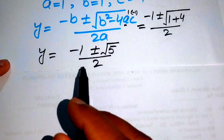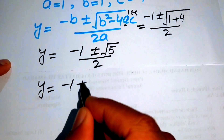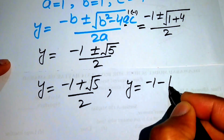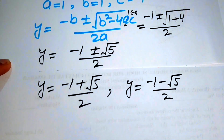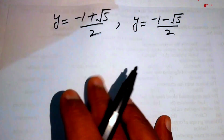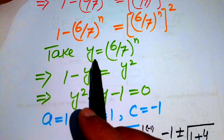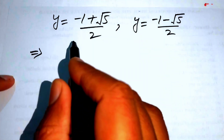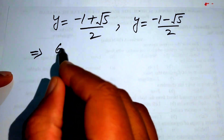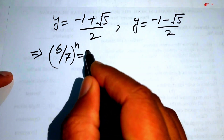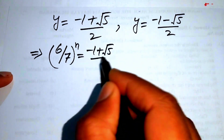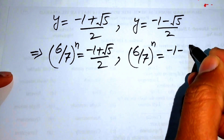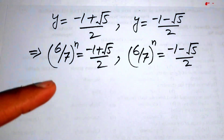We split into two cases. The positive case gives y = (-1 + √5) / 2, and the negative case gives y = (-1 - √5) / 2. Back-substituting y = (6/7)^n, each case becomes (6/7)^n equal to the respective value.